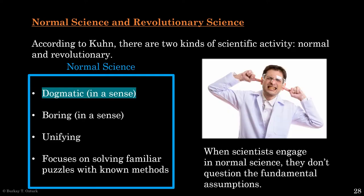Kuhn thinks that normal science is somewhat dogmatic because in this phase, scientists don't question the fundamentals of their shared paradigm. I still remember being a physics major decades ago and asking my electricity and magnetism professor questions implying that maybe the photon energy equation is inaccurate because it ignores amplitude. My professor couldn't answer my questions — he didn't know why the equation didn't take amplitude into account. But this didn't bother him at all. He was sure there must be an explanation he was missing. He told me bluntly, 'I don't have time for this. Go talk to a philosopher.' And I did. And here we are.